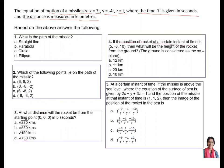Fourth: if the position of the rocket at a certain instant of time is (5, -8, 10), then what will be the height of the rocket from the ground? The ground is considered as the xy-plane. Options: 12 km, 11 km, 20 km, 10 km. Fifth: at a certain instant, the missile is above sea level where the equation of the surface of the sea is 2x + y + 3z = 1, and the position of the missile is (1, 1, 2). Then the image of the position of the rocket in the sea — options are (-9/7, -1/7, -10/7), (9/7, -1/7, -10/7), (-10/7, -9/7, -1/7), and (-1/7, 10/7, ...).